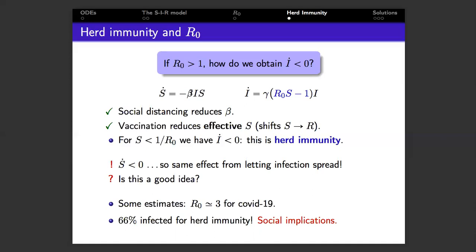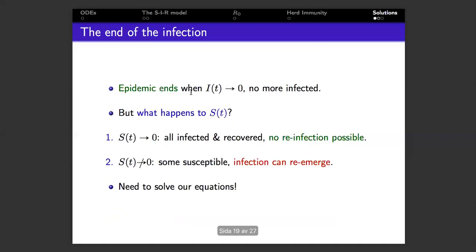Note from this equation the minus sign which tells us that the rate of change of S is negative, so S is decreasing. So the question to ask is, is it a good idea to let the virus spread and aim for herd immunity that way?